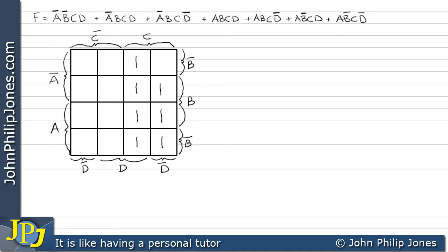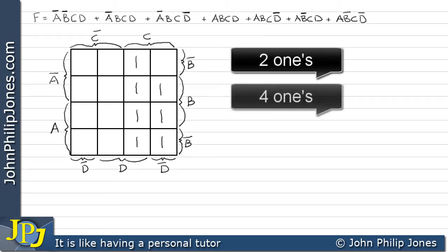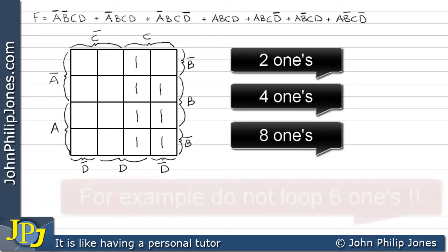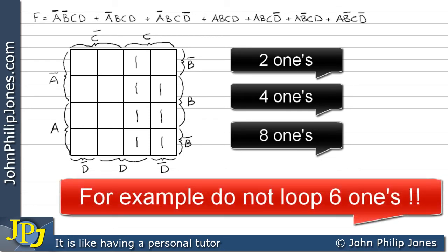We now have to minimize by looping the 1s we just plotted as appropriate. It is important to remember, however, that we loop 2 ones, 4 ones, or 8 ones. We cannot, for example, loop 6 ones.